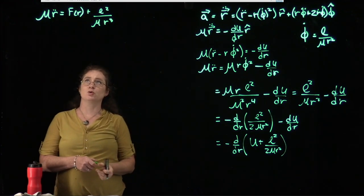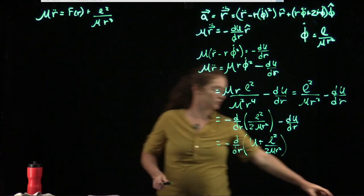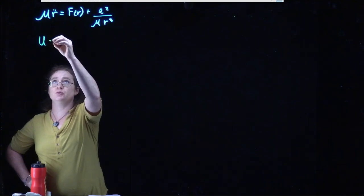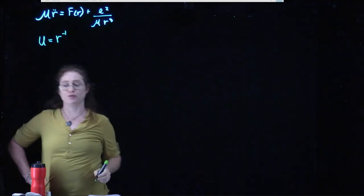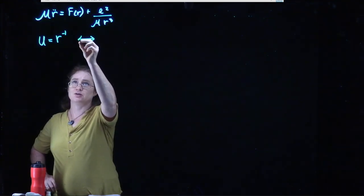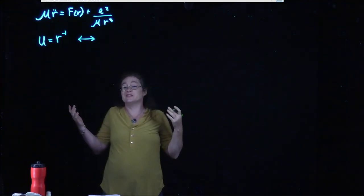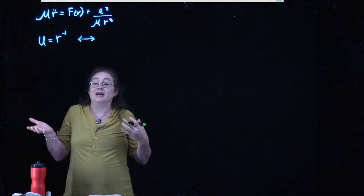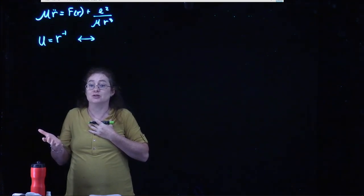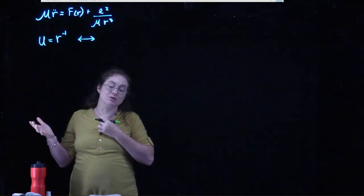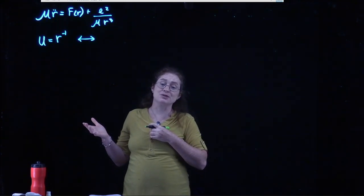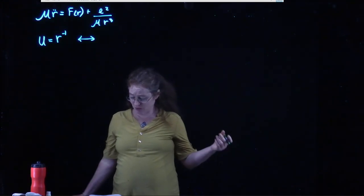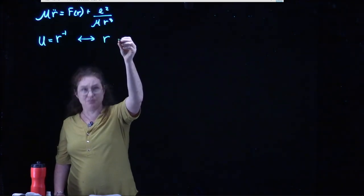We're going to do a variable change that is not terribly intuitive the first time you see it. We often do this where a change of variables simplifies an equation. When asking if you could have guessed this substitution yourself, honestly, this is still entirely non-intuitive. But remember that people spent decades thinking about planetary motion, trying things, and eventually something worked.